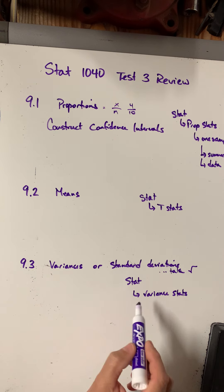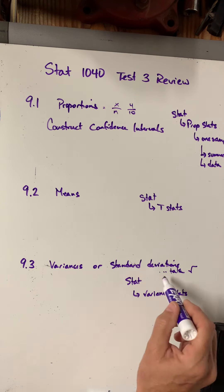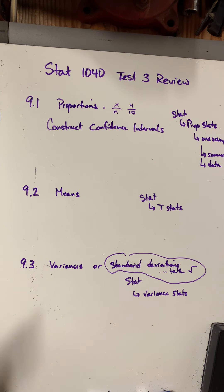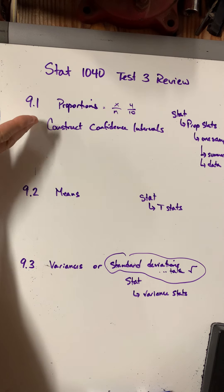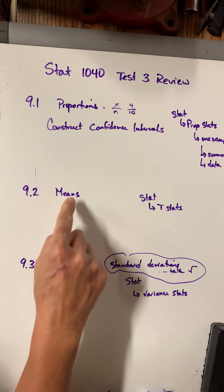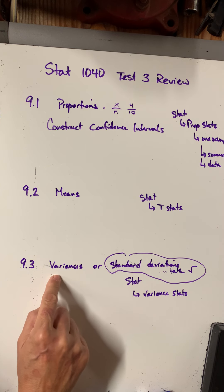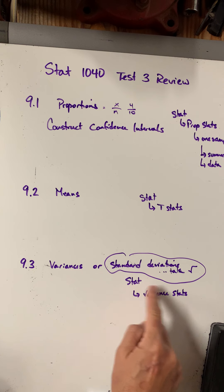To summarize: for a confidence interval for a proportion, use Stat > Proportion Stats. For mean, use Stat > T-Stats. For variance, use Stat > Variance Stats. For standard deviation, use Stat > Variance Stats and then take the square root of your answers. They also wanted you to show normality, with each type having slightly different stipulations — check your notes for those details.